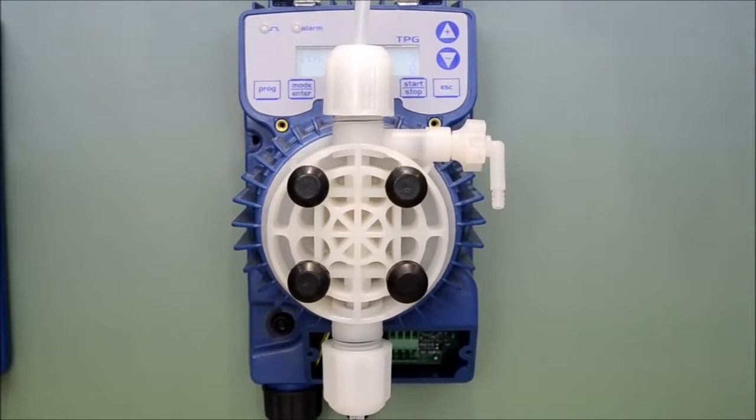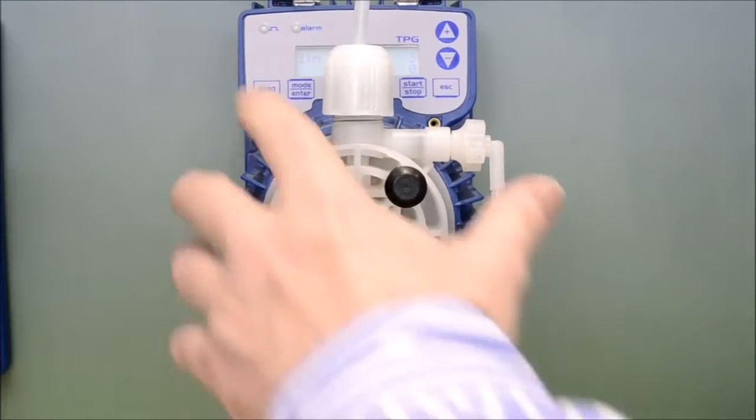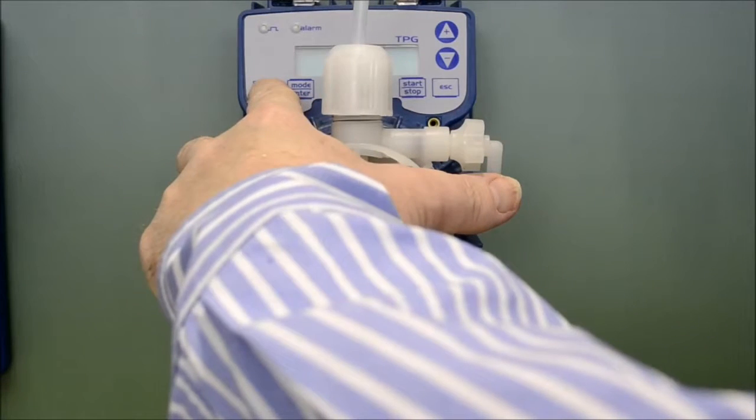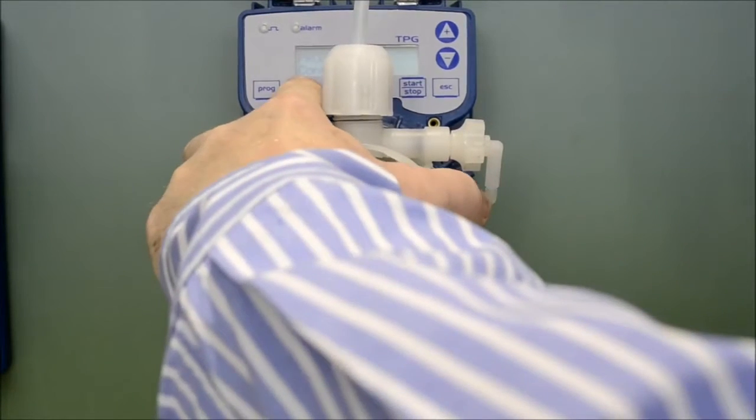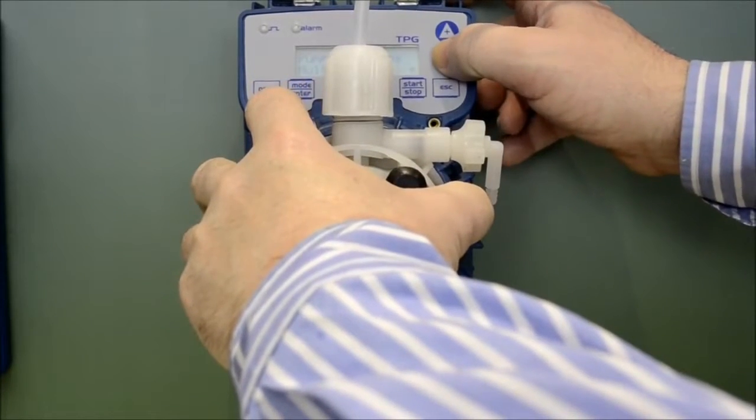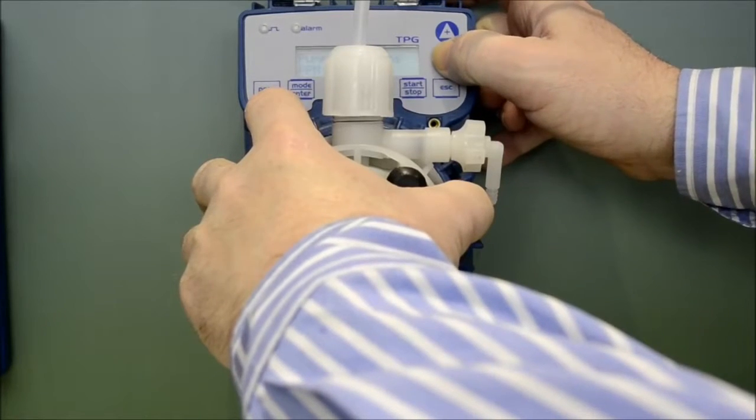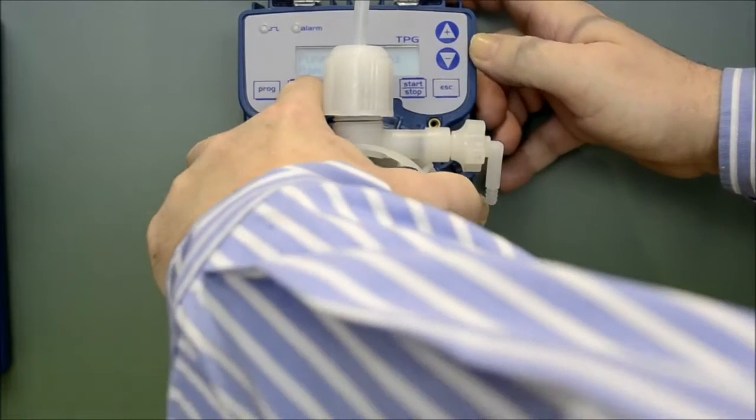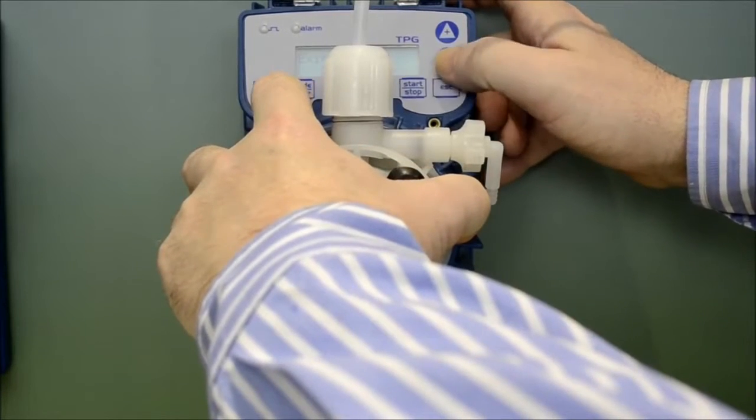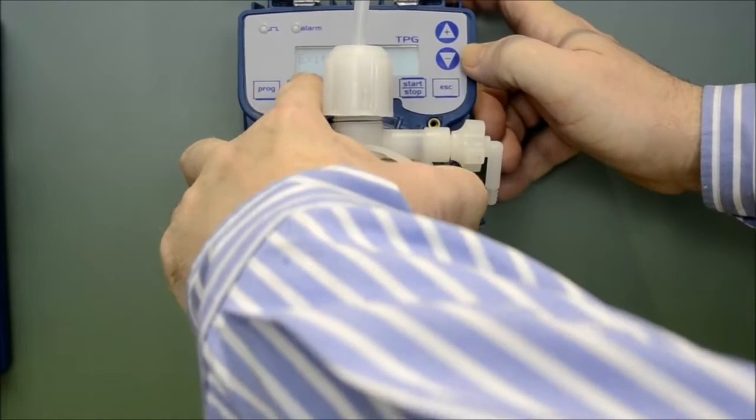If longer periods of priming are required simply press and hold the program button. Press enter twice to pump functions. Change to manual mode by using either the plus or minus button. Pressing enter to confirm, escape and then saving the changes.